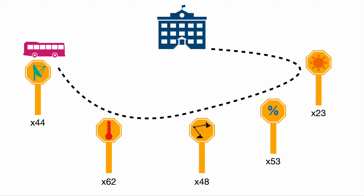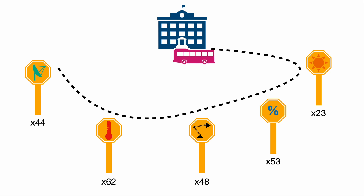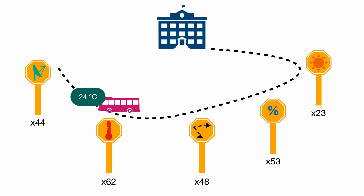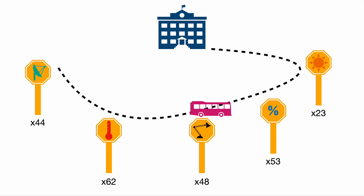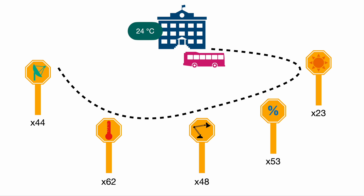So let's say we want to know the temperature. We start at the main station — our master device — and address the temperature sensor directly, telling our bus to go right to 0x62, calling that specific sensor's address. We get the latest measurement data loaded into our bus, travel all the way back to our main station, unload the measured data, and then process it.